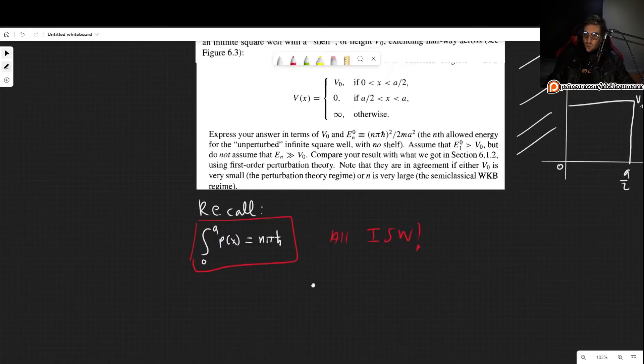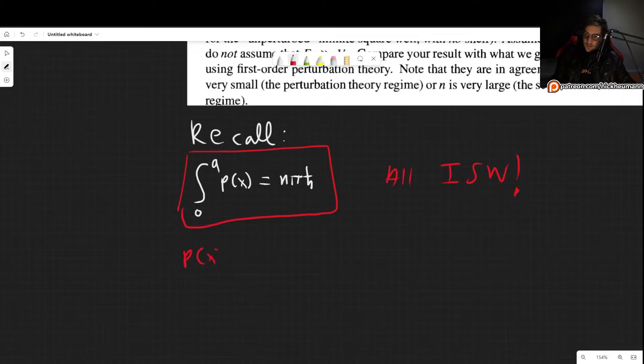And what is the momentum here? The momentum is the classically defined momentum, so 2M times E minus V of X, square root of course.